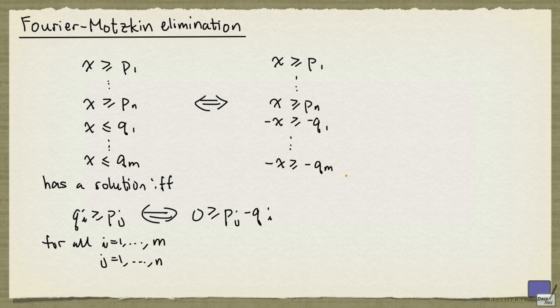And so essentially what we are doing is, if we are looking at this system, we are just taking all possible pairs of inequalities, one from up here and one from down here, and add them together.